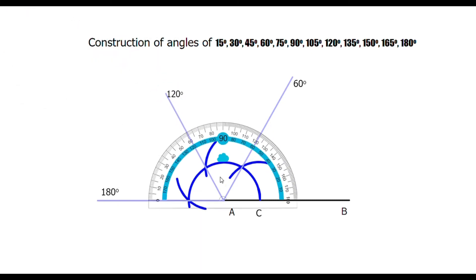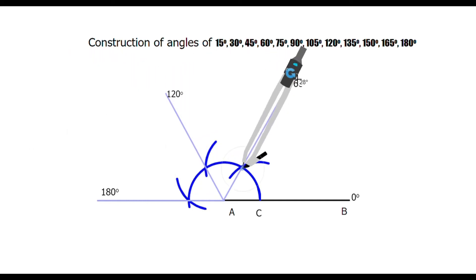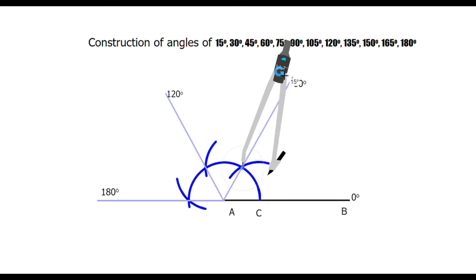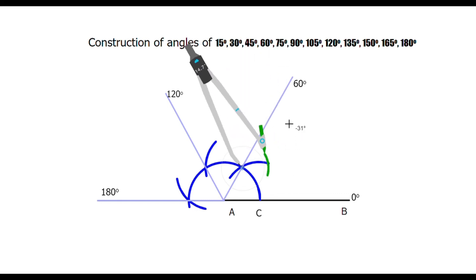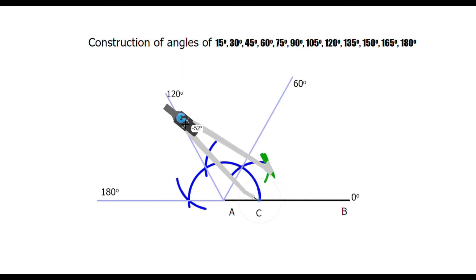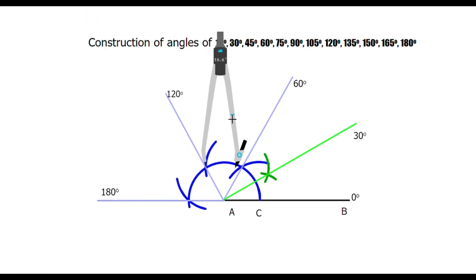We can verify it with the help of a protractor. We know that 30 lies between 0 and 60, so if we draw an angle bisector between 0 and 60 we get a 30 degree angle. If we bisect 60 and 120 we get a 90 degree angle.